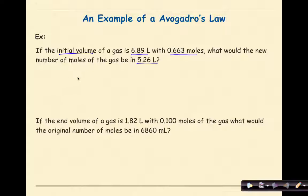Let's start out by writing our formula. So V1 over N1 is equal to V2 over N2. My initial volume is 6.89 liters, and my initial number of moles is 0.663 moles. We're looking for the new number of moles of the gas if the new volume is 5.26 liters.